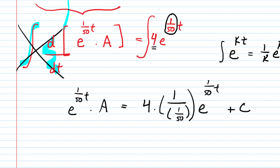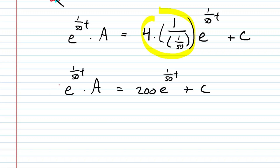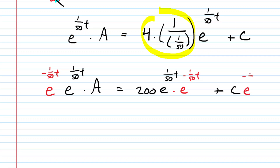Working out the arithmetic, 4 times 50 equals 200, so we rewrite that as 200 e to the one-fiftieth t plus C. Next, we multiply each term by e to the negative one-fiftieth t. When we multiply those exponentials we add their powers, getting e to the zero, which is just 1. So the left-hand side simplifies to A, and the 200 e to the one-fiftieth t term also simplifies to 200.